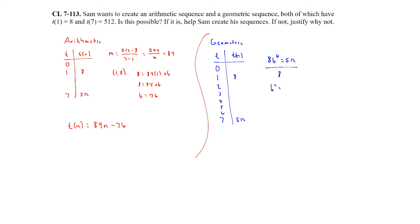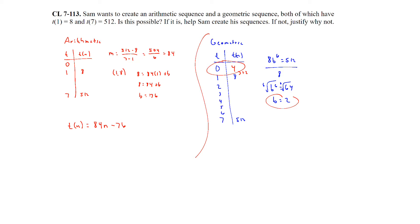Dividing by 8 gives b to the 6th equals 64. Taking the 6th root of 64 gives b equals 2. Working backwards, dividing by 2 gives an initial value of 4. So we can write the geometric sequence as T(n) equals 4 times 2 raised to the n power. Sam can create both an arithmetic and a geometric sequence.